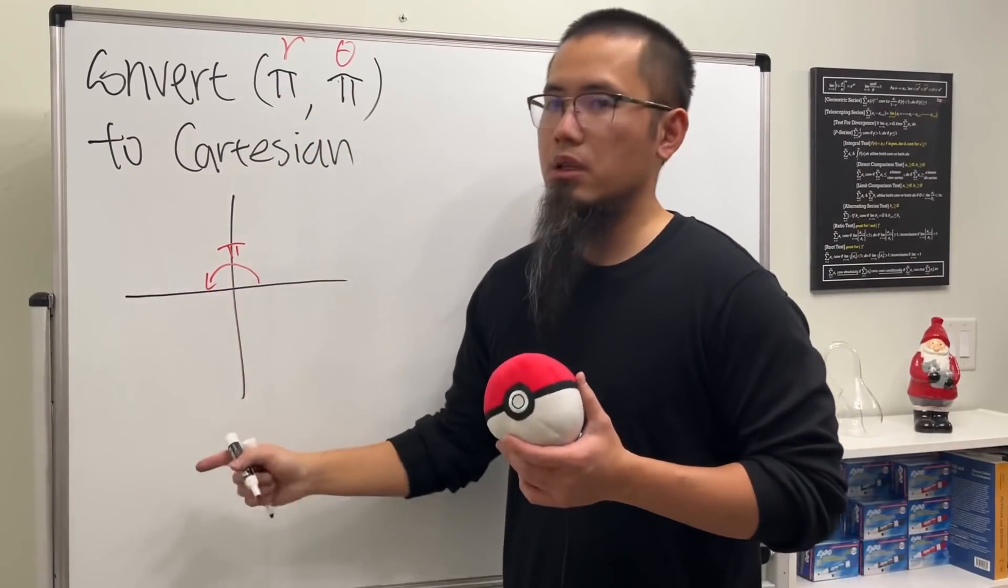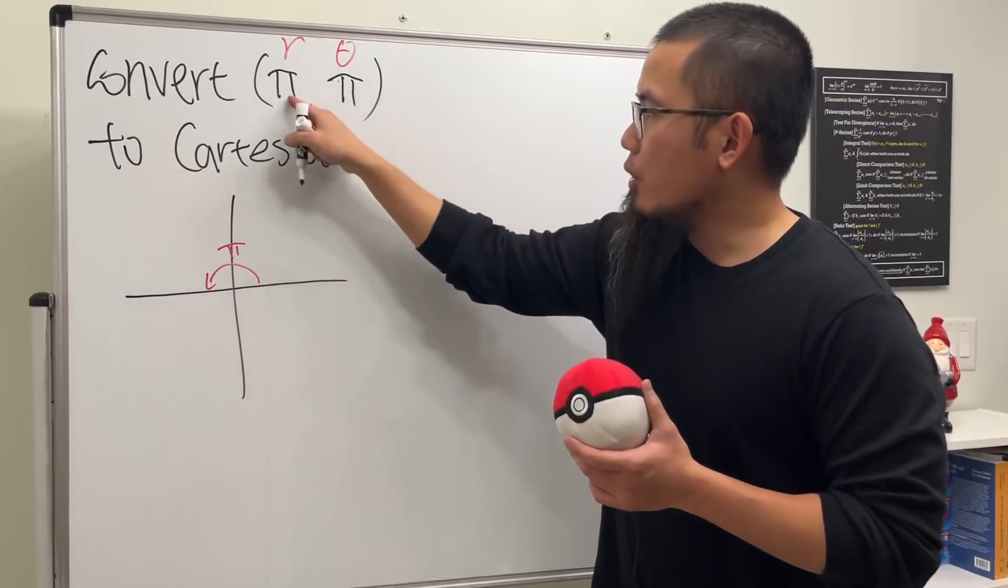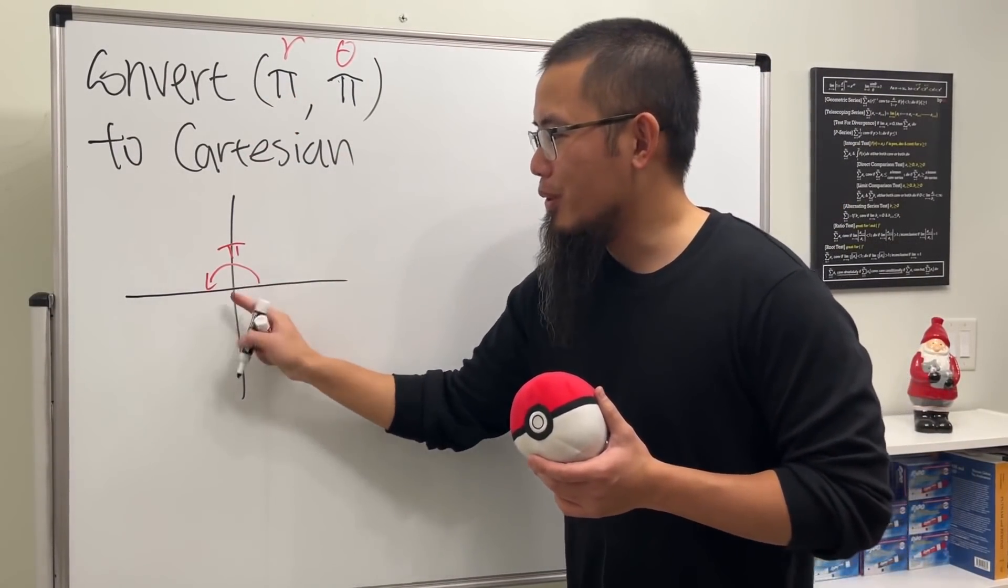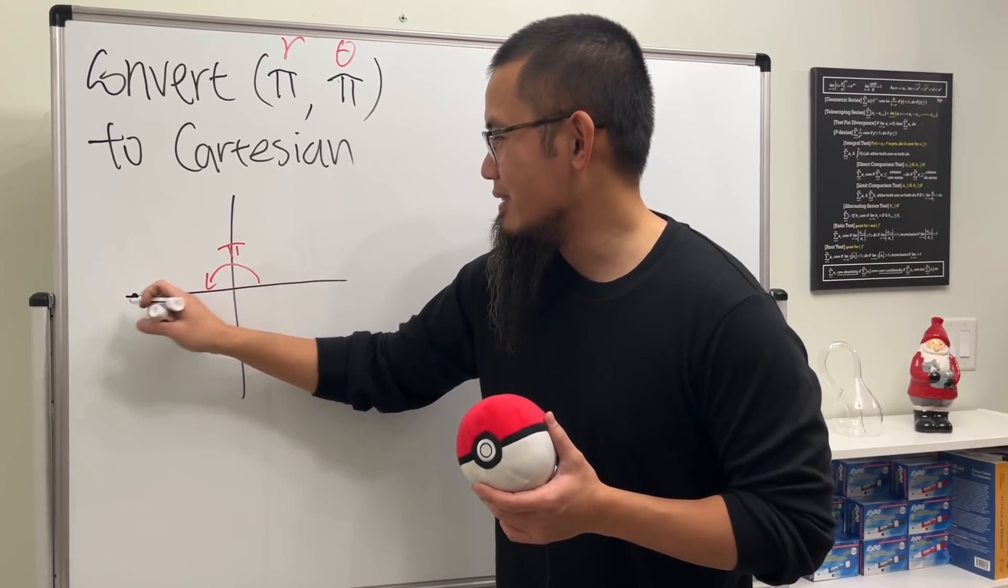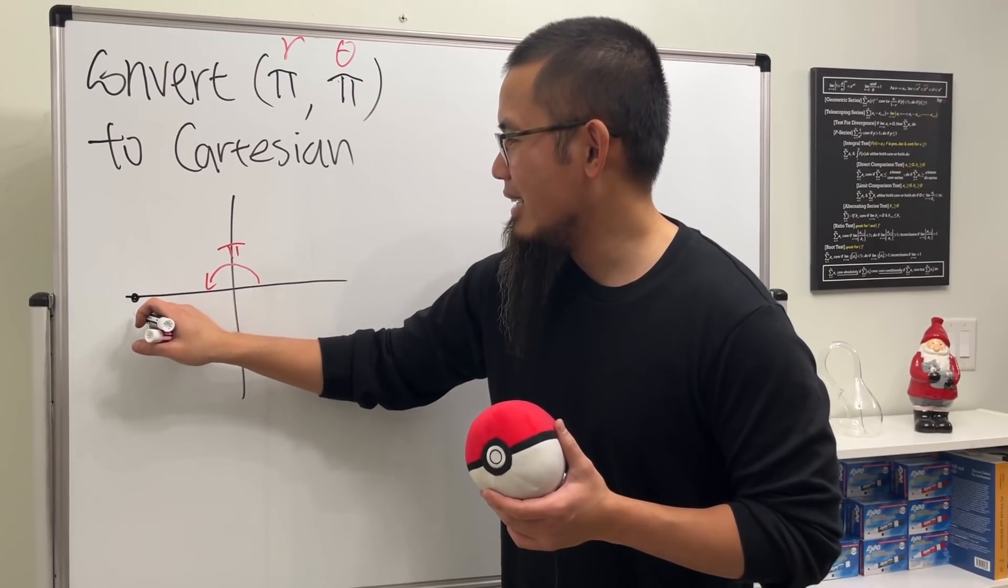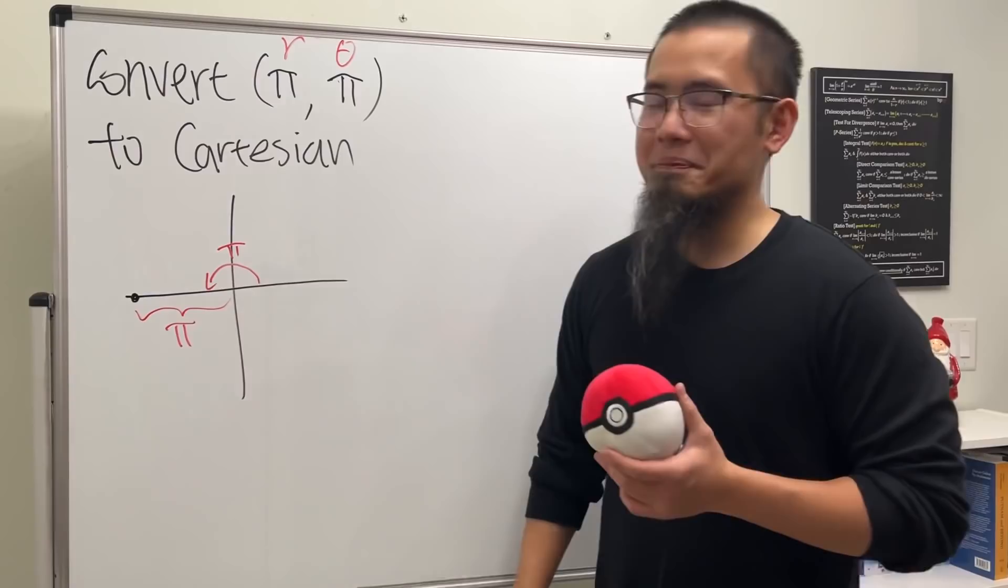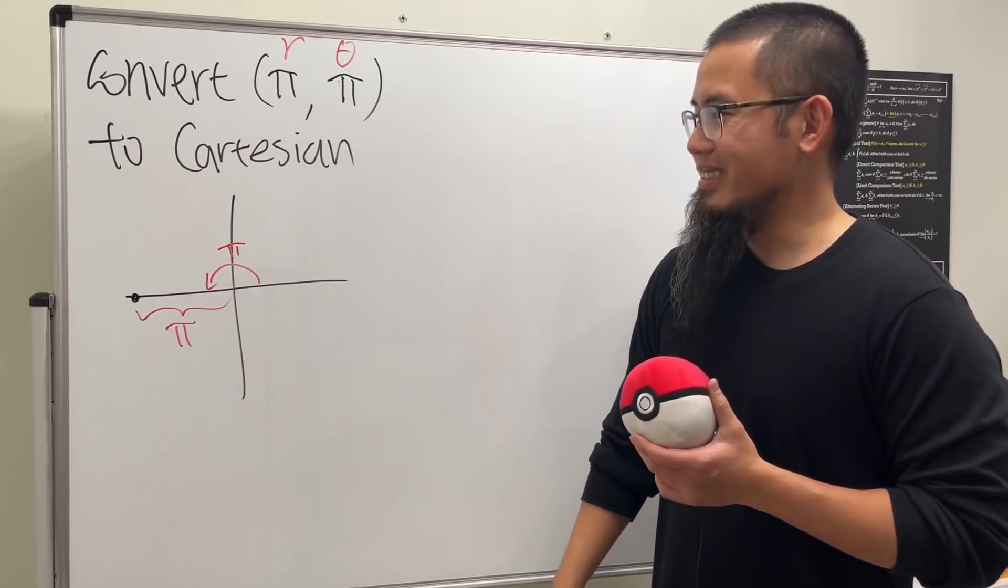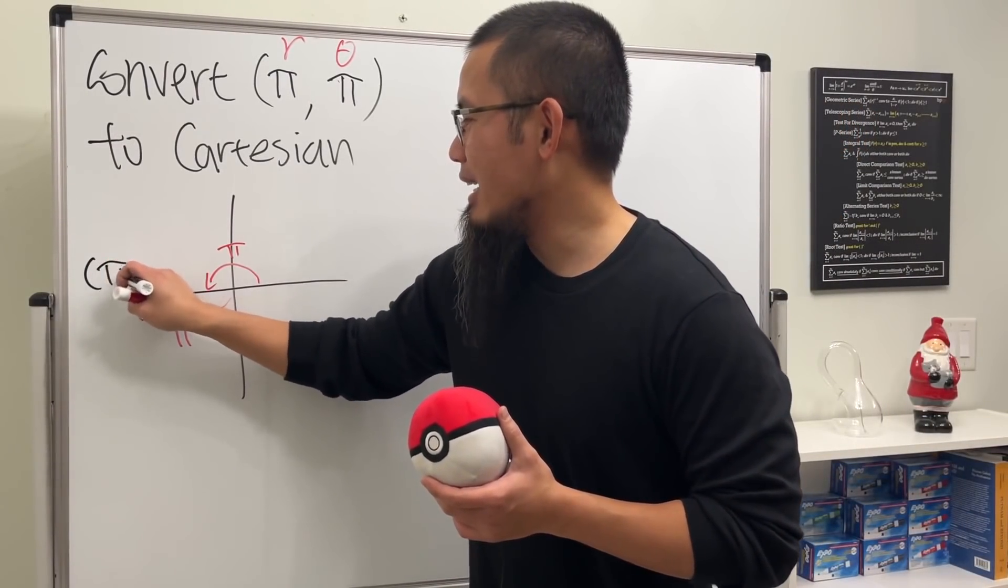Because this is a positive π, it means we go forward. Sometimes you can have negative and that means you go backwards. So the π here just means we are going to go out from here π units away. So that's where the point is, and this is π units away from the origin.